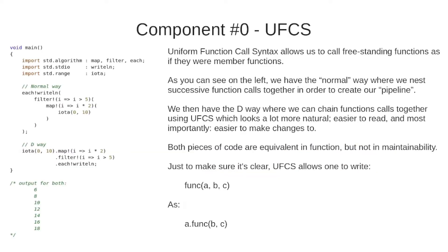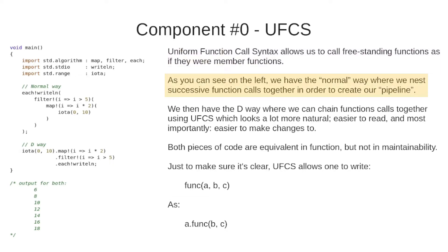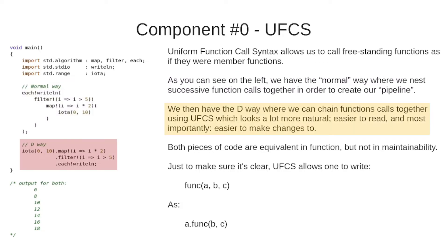Before we do that, we need to look at a few components in D that will allow us to write our own version of std.conv.to. First of all, we have Uniform Function Call Syntax, otherwise known as UFCS. It allows us to call freestanding functions as if they were member functions. As you can see on the left, we have the normal way where we nest successive function calls together to create our pipeline. We then have the D way where we can chain function calls together using UFCS, which looks a lot more natural, easy to read and most importantly easy to make changes to.